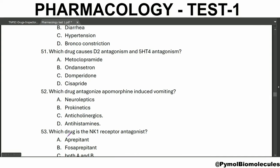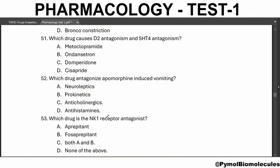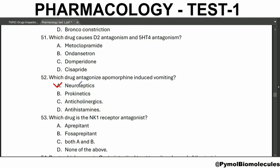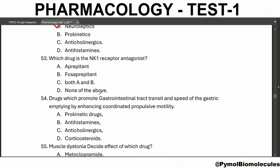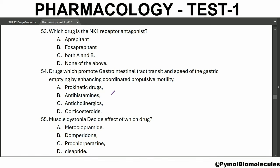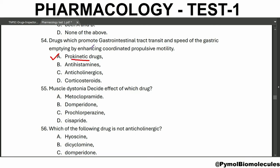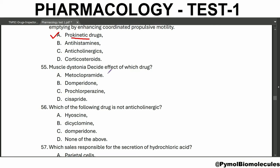Which drug causes D2 antagonism and 5-HT4 agonism? Metoclopramide. Which drug antagonizes apomorphine-induced vomiting? Neuroleptics — for example, chlorpromazine. Which drug is the NK1 receptor antagonist? Aprepitant and fosaprepitant. Drugs which promote GI transit and speed of gastric emptying by enhancing coordinated propulsive motility are prokinetic drugs. Muscle dystonia is a side effect of prochlorperazine.